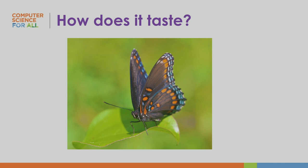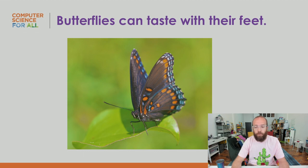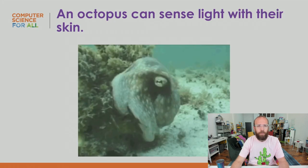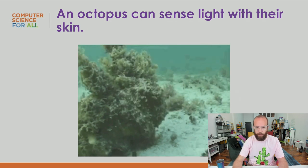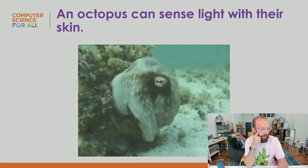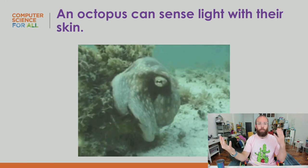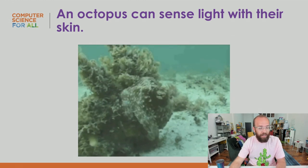How does a butterfly taste? Butterflies can taste with their feet — when they land on something, they pick up the chemicals and can tell whether it's food they'd want to eat. An octopus can sense light with their skin. Their camouflage ability, which changes both color and texture, isn't driven by their eyes — their skin has receptors that pick up light from whatever they're on and uses that to mimic the pattern.